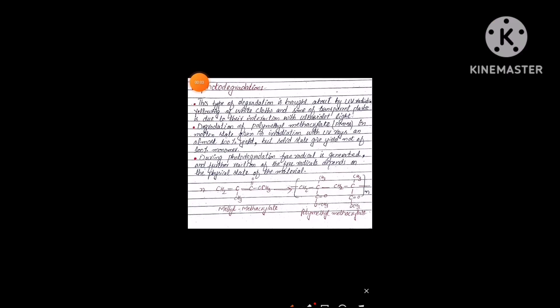Welcome students. We are studying the course organic polymer, and the topic is polymer degradation. In the last topic we studied thermal degradation, and in today's topic we will discuss degradation of polymer in the presence of light — photo-degradation. This type of degradation is brought about by UV radiation.